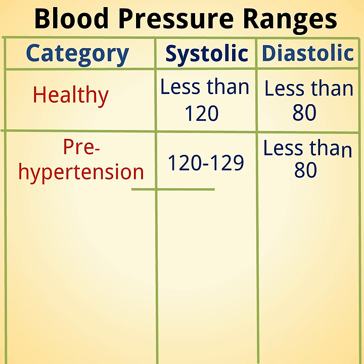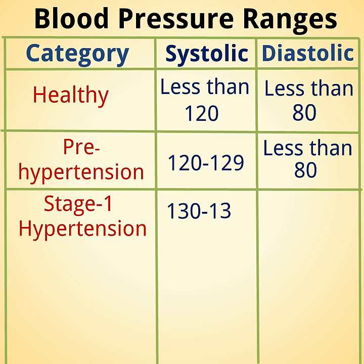Stage 1 hypertension has a systolic blood pressure of 130 to 139, and diastolic of 80 to 89.